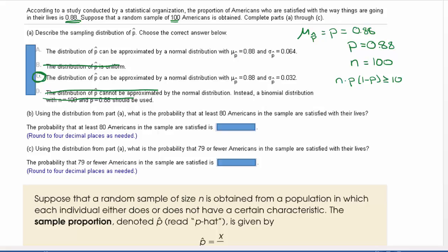Alright, let's look at part B. Using the distribution from part A, what is the probability that at least 80 Americans in the sample are satisfied with their lives? I'm going to draw out the not very pretty normal curve so I can show you what's going on. In the very center here, this is going to be our p, so that's 0.88. That is the mean.